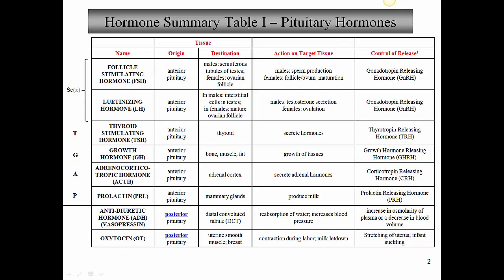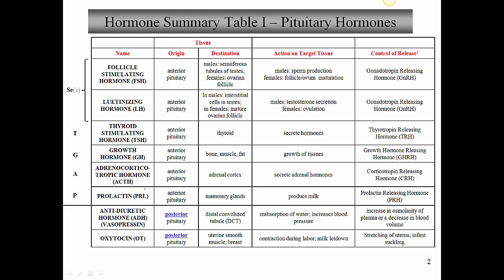Let's first review the table I put together for you for pituitary hormones. This is table 1. I have actually two tables: this first table details all the hormones in the pituitary, and the second table details all the hormones in the other tissues in the body. You'll notice all the hormones on top are contained within the mnemonic SET GAP - these are all the anterior pituitary hormones. The two hormones on the bottom are secreted by the posterior pituitary: ADH and oxytocin.